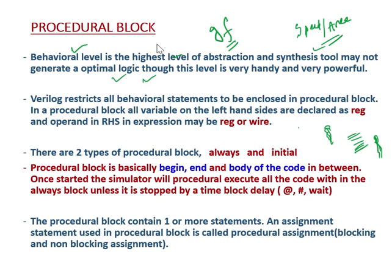In a procedural block, all variables on the left-hand side are declared as reg. For example, if I write A equal to B, then A on the left side must be a reg type, and B on the right side must be either reg or wire. The left-hand side inside a procedural block has to be a reg net type, and the right-hand side has to be reg or wire.